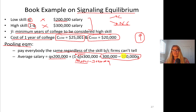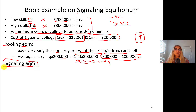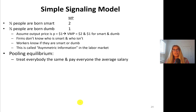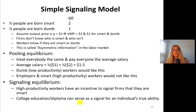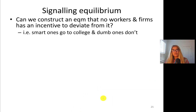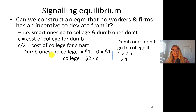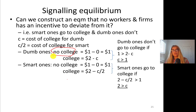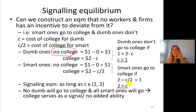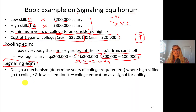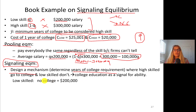Now let's look at the separating equilibrium, which is very important because we're going to pay different groups differently. In the signaling equilibrium we want high-productivity workers to go to college and low-productivity workers not to. We are going to design a mechanism to determine the years of college requirement where high-skilled people will go to college and low-skilled people won't, so college education works as a signal for ability.